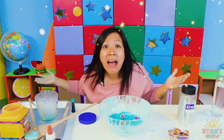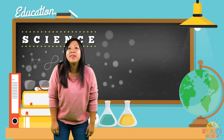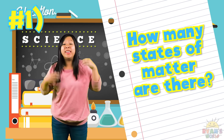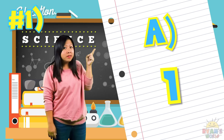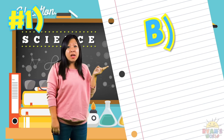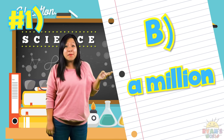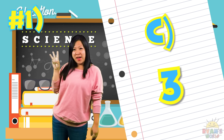Whoa! And now the gas will spread and take the shape of the room. So now that we've learned all about solid, liquid, and gas, how about we take a test? Question number one: how many states of matter are there? Is it A, one state of matter? Or is it B, a million states of matter? Or is it C, three states of matter?